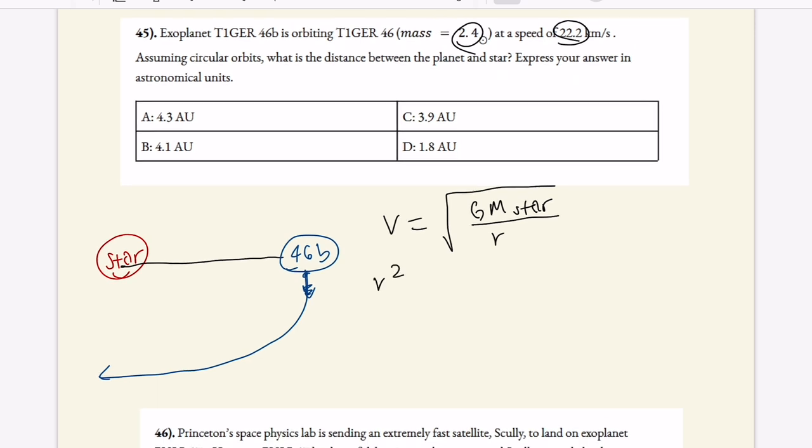Solving for r, we can square both sides and get this statement, and then we can divide over and get G m star divided by v squared. So we have all our values, so all we need to do is plug it in and be very careful about the unit conversions. So let's go ahead and do that.